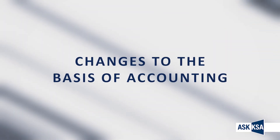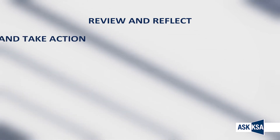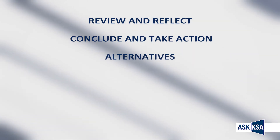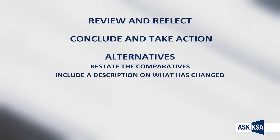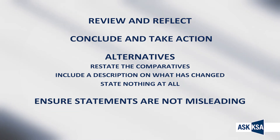Your client might change their basis of accounting one year — that's not an issue. What you have to think about is the impact on your conclusion or whether the statements are misleading. Review the impact of the change in the current year and reflect on the comparative information. Conclude on the impact on the current year's statements and what action to take. There are three alternatives: restate the comparatives; include a description in the basis of accounting note on what has changed; or do nothing at all. Reflect on the statements to ensure they are not misleading and document your conclusions. A change in the basis of accounting is perfectly acceptable — your responsibility is to ensure the financial information is not misleading.